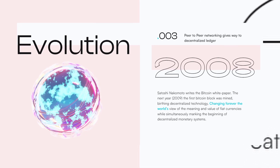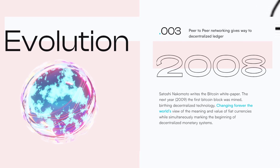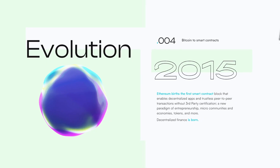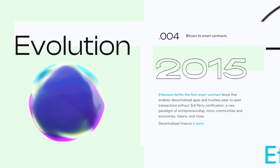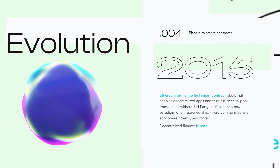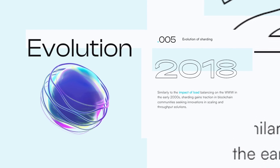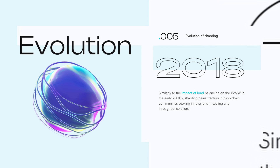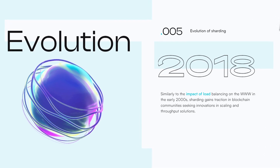After introducing Amazon Web Services, the shopping cart was invented, empowering things like e-commerce and logistics. Then in 2008, Satoshi Nakamoto wrote the white paper for Bitcoin, and the first block was mined in 2009, leading to the birth of decentralized technology as we know it today. Ethereum had its first smart contract block in 2015, enabling decentralized apps and trustless peer-to-peer transactions. Similarly, sharding gained traction in blockchain communities seeking innovations in scaling and throughput solutions.